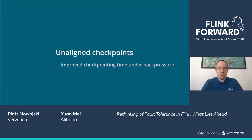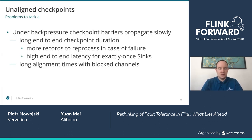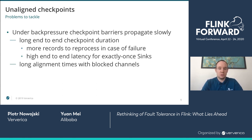So how can we improve checkpointing time under back pressure? Our idea is unaligned checkpoints. What happens currently is that if a job is under back pressure, checkpoint barriers can propagate very slowly — they travel through the job graph only as fast as the buffered in-flight data are being processed. This causes long alignment phases and long end-to-end checkpoint durations. The longer the duration between two checkpoints, the more records we need to reprocess in case of failure, and the higher the end-to-end latency for exactly-once sinks. Exactly-once sinks can only commit writes once a checkpoint is completed, so end-to-end exactly-once latency is defined by how quickly we can complete checkpoints.